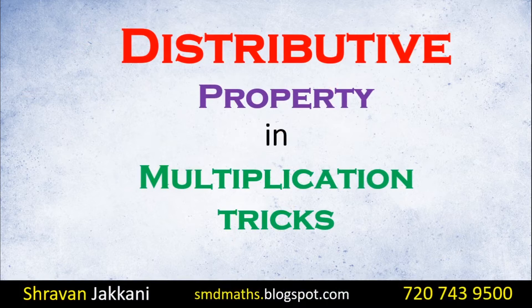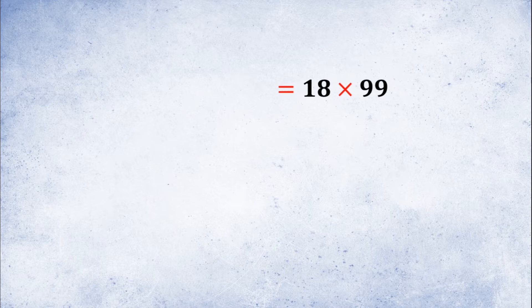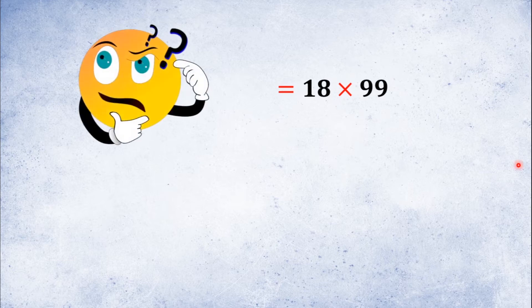This is how we apply the Distributive Property to multiply efficiently. There are various multiplication tricks. This is our core logic — the Distributive Property. This is 18 times 99. Let me show you the same method. We have to make the step: 18 times 99.